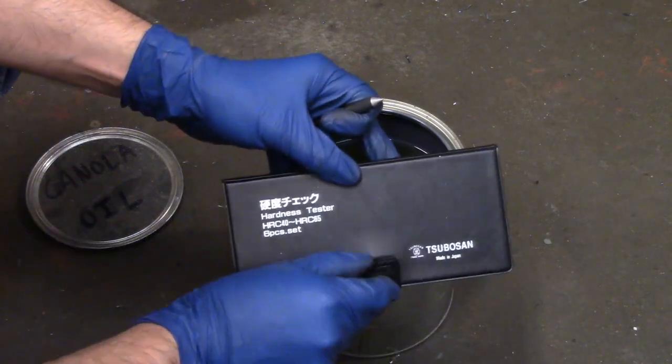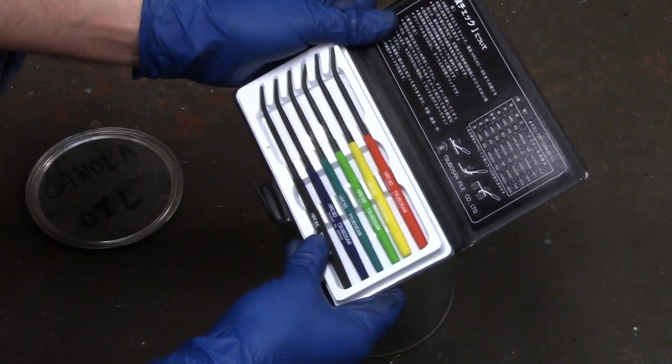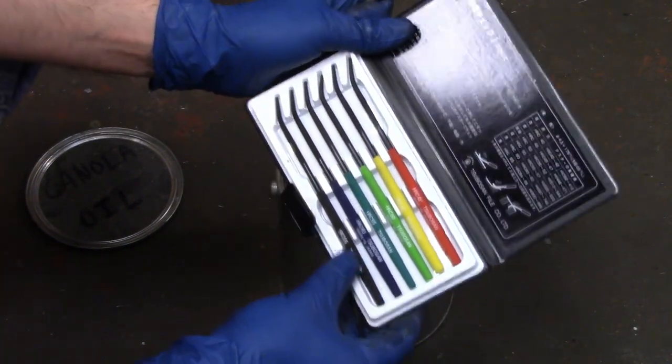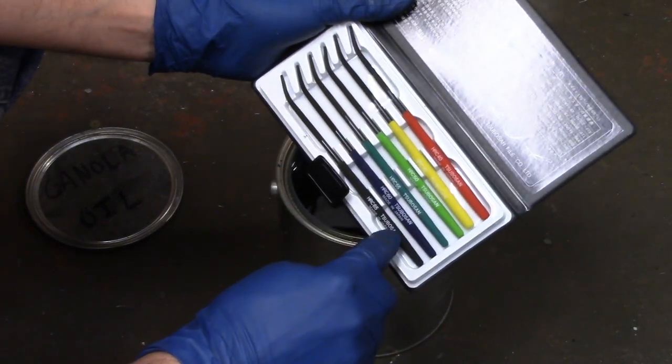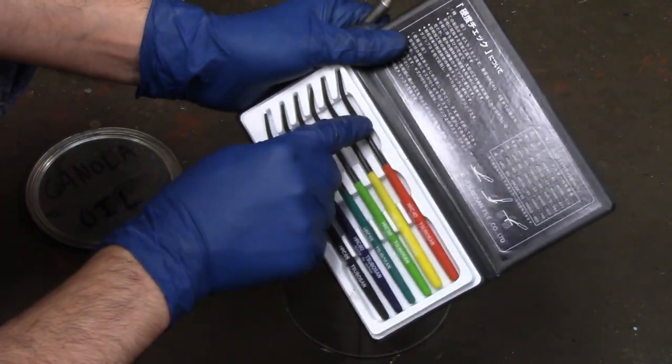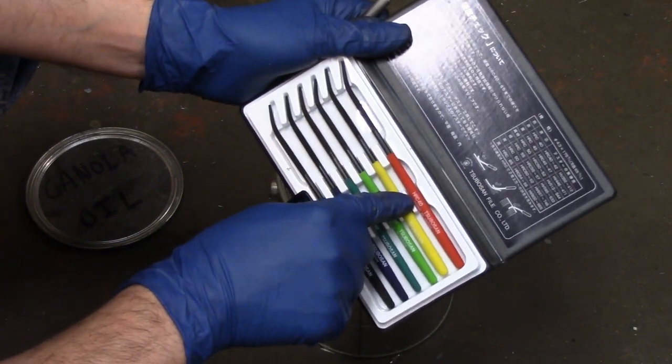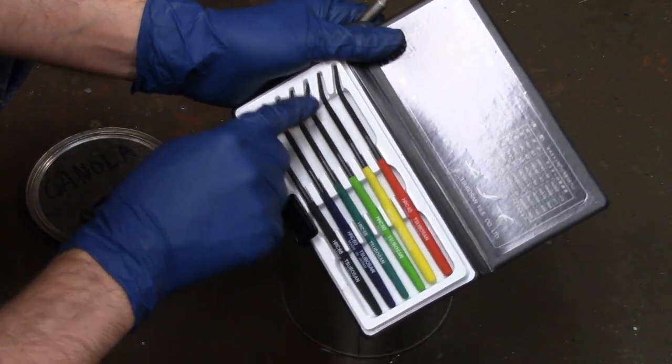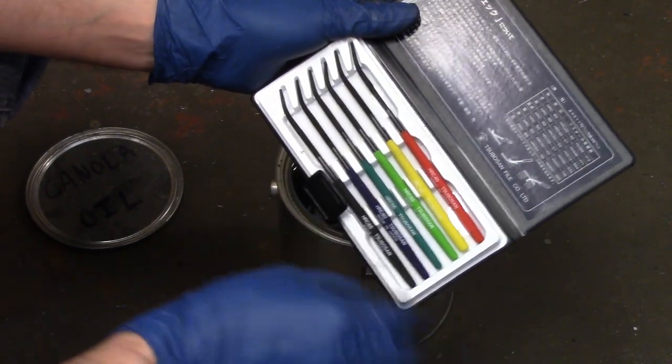If you've never seen these, they're really handy and quite affordable, too. I think you can get this set for certainly less than $100. You have six files in there, and this file right here will scratch Rockwell C40, or that is what the hardness of the file is. And then it goes all the way up to Rockwell 65 on the C scale.